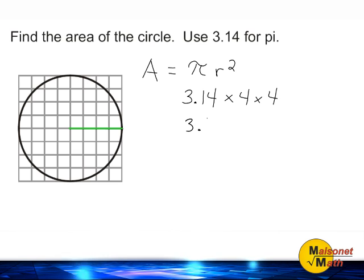4 times 4 is 16, so after multiplying 3.14 times 16, that is going to tell us what the area of our circle is.